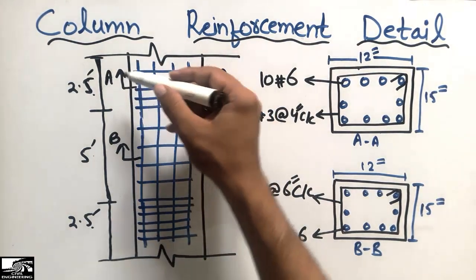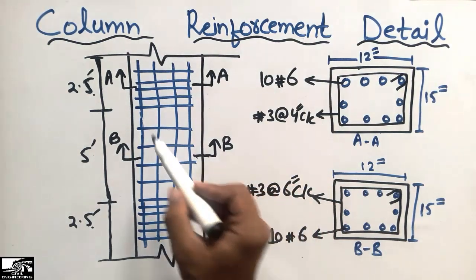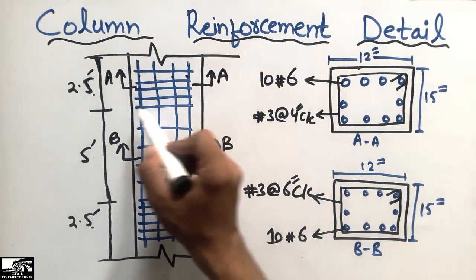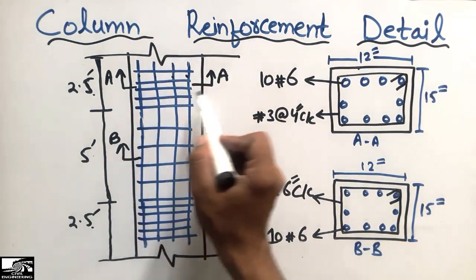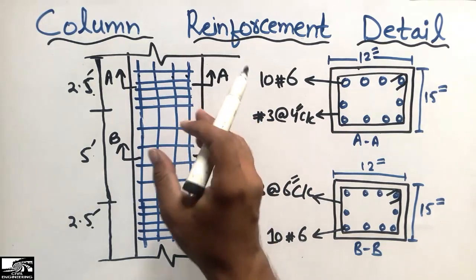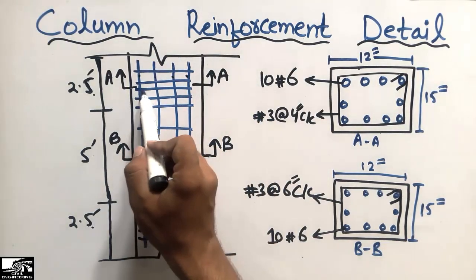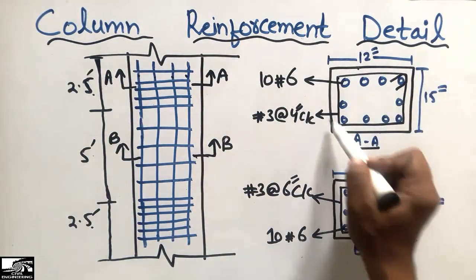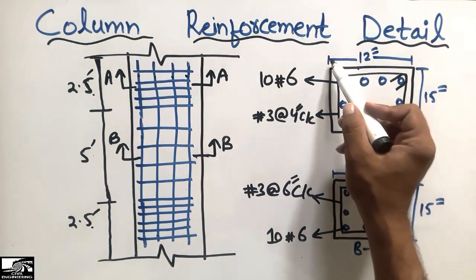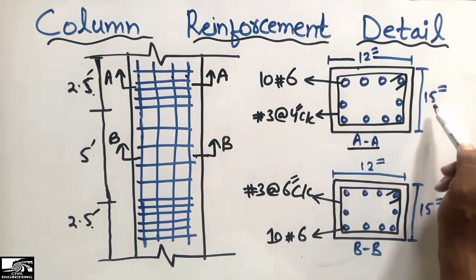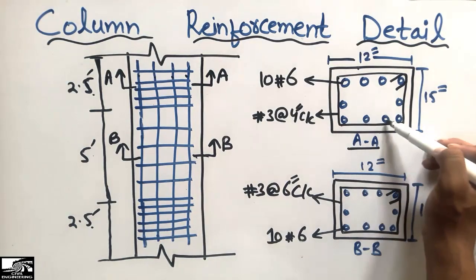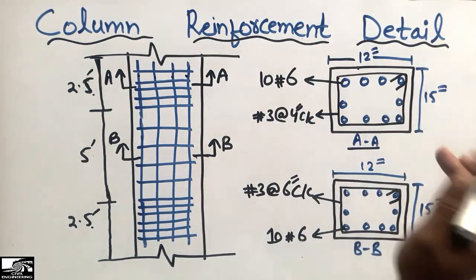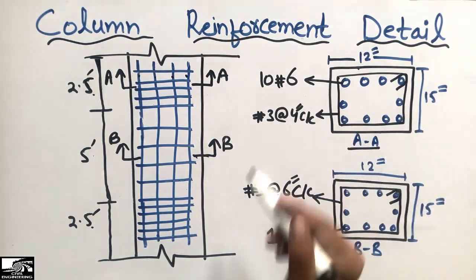Starting from the column elevation view, you can see one, two, three, four main bars. But in the section view we can know how many bars are provided. In section A, the cross-section dimensions are 12 inches by 15 inches, and there are ten bars provided in this column cross-section.